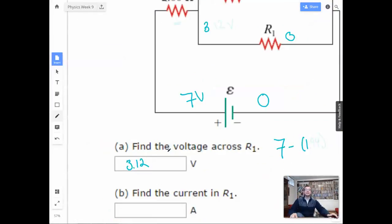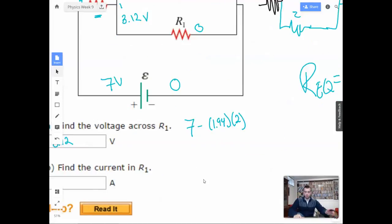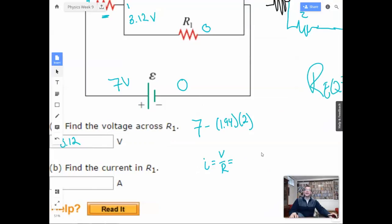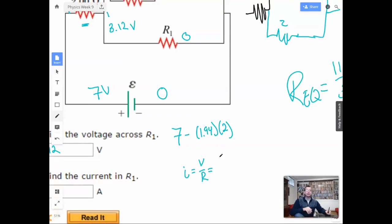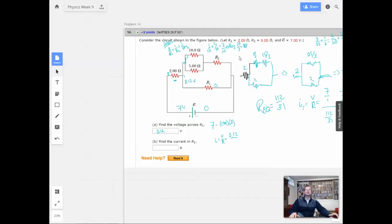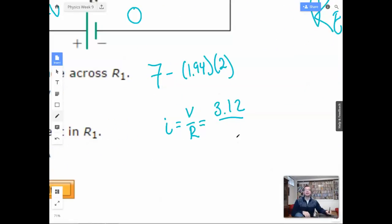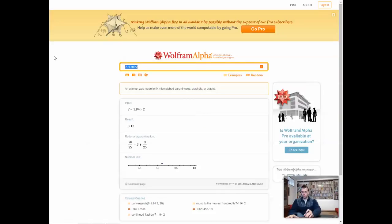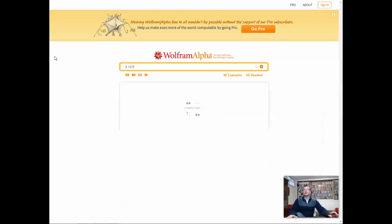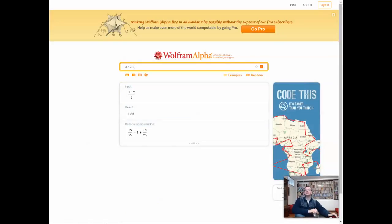Okay, now let's define the current through R1. Okay, so the current is going to be, current equals voltage divided by resistance, 3.12 over R1, which is 2. How can I do that in my head? Probably could. I'm not going to. 3.12 divided by 2. And we better get an answer less than the total, 1.56.